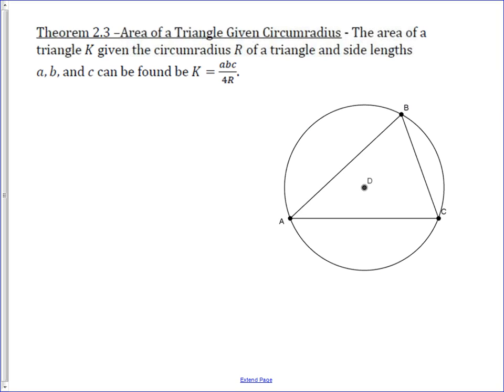The area of a triangle given a circumradius is not one of these theorems that is super intuitive when you look at a picture. Instead, it's just a really nice natural result of another result, two other results about triangles.